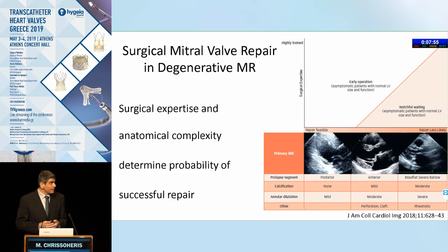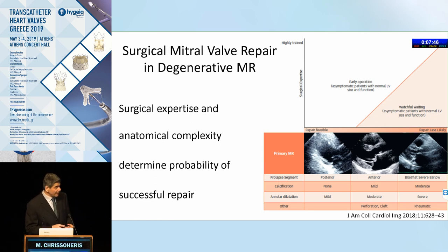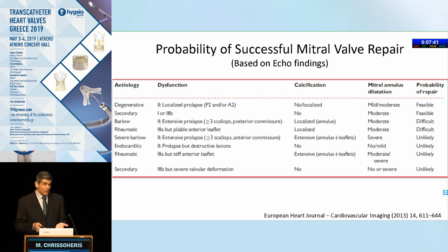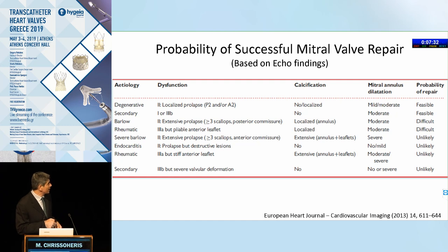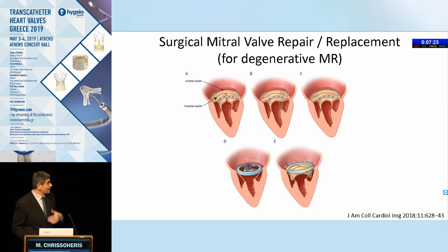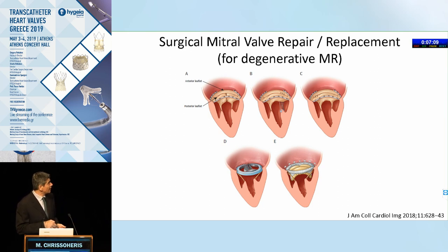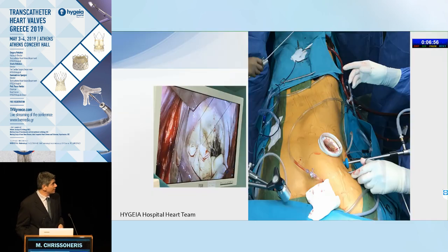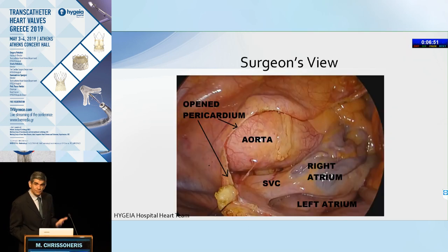For surgical mitral valve repair for degenerative mitral regurgitation, surgical expertise and anatomic complexity will define the probability of successful repair. Localized posterior flails are very easy to repair; however, more extensive prolapsing, multiscallop prolapse — especially if it involves the anterior commissure — or calcification at the annulus level make the procedure more difficult. Surgical techniques include resection of the posterior P2 leaflet with sliding plasty, new cords on the anterior or posterior leaflet, commissuroplasty for commissural flails, or chordal-sparing mitral valve replacement. All these can be performed via a thoracoscopic approach, which is very beneficial for the patient.